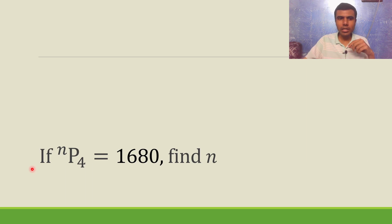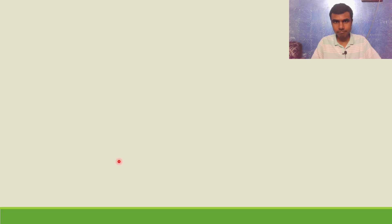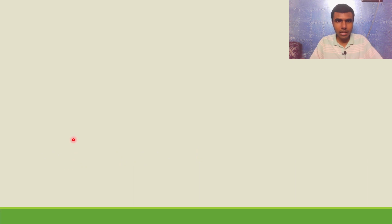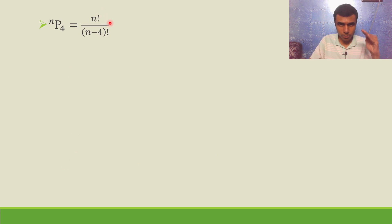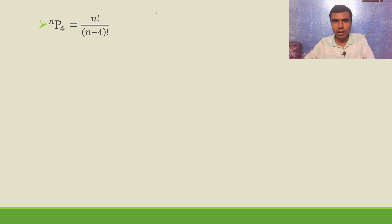Hello, I'm Akash. nP4 is 1680 and I have to find n. Let's see what exactly nP4 is. nPr is nothing but n factorial by n minus r factorial, so nP4 is n factorial by n minus 4 factorial.